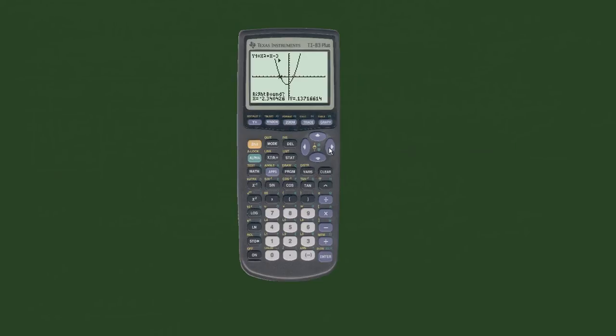Now it's going to ask us for the right bound, right? So we want the right-hand side of the function, or at least the closest point to where the x crosses...